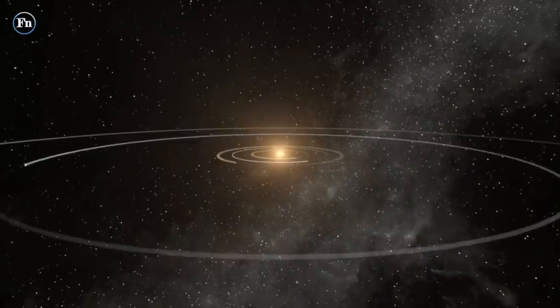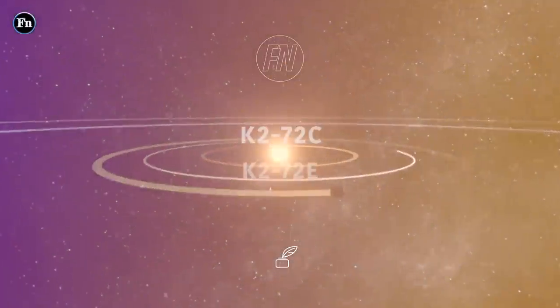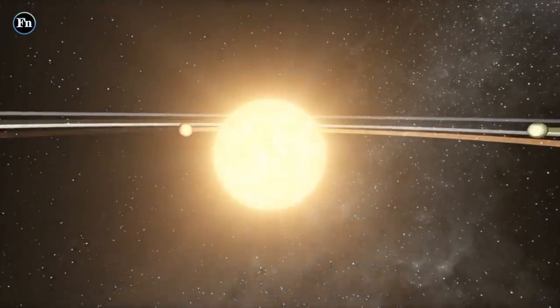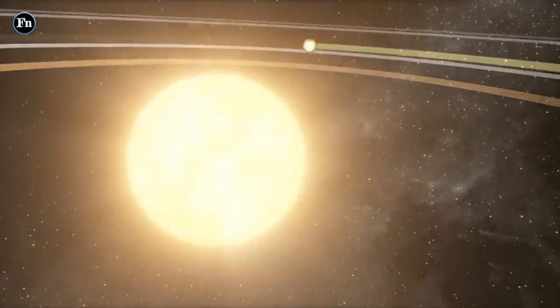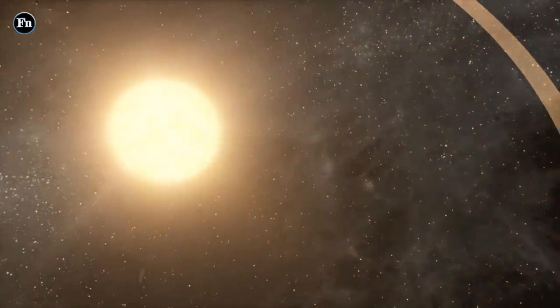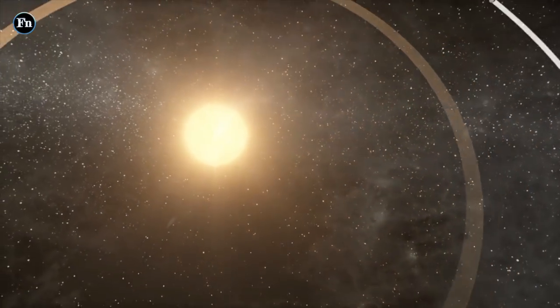Two of the four planets, named K2-72c and K2-72e, are precisely in the star's habitable zone. Since K2-72 is a red dwarf, its habitable zone is much closer than that of the sun.